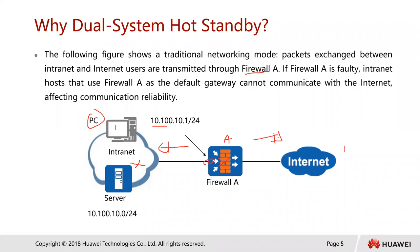If only one firewall is deployed at a service connection point, the network services may be interrupted due to a single point of failure, no matter how reliable the firewall can be. To prevent network service interruptions due to single point of failure, we can deploy two firewalls to form a dual system hot standby.